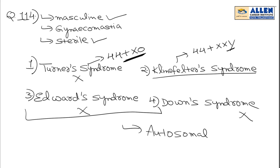So two points are clear. Now coming to the third point: normally there should be only one X, but here there are two X chromosomes. So female characters will start appearing in the person. Even though the person is male, breast development will start — and this is called gynecomastia. So according to all three characters, our answer is option number 2, that is Klinefelter's syndrome.